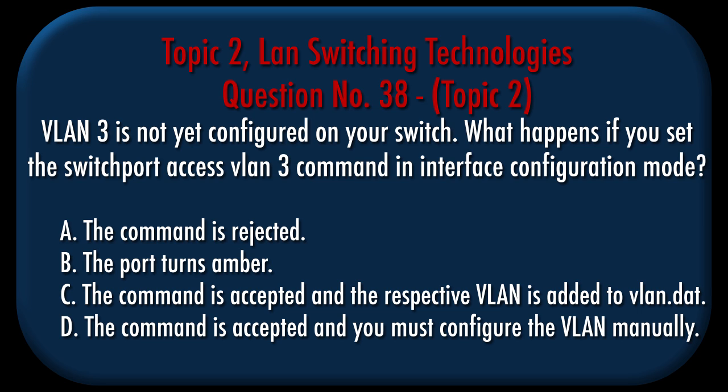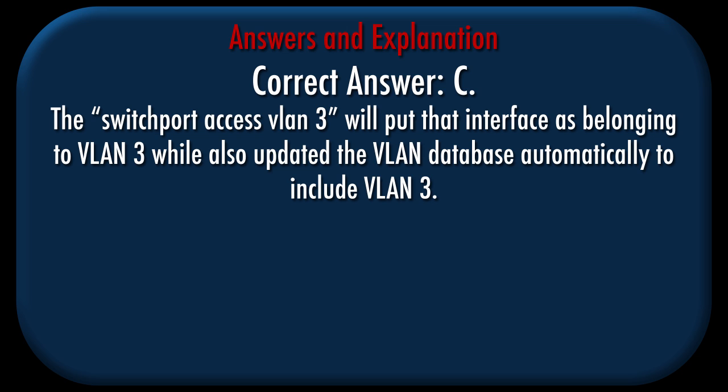Question number 38, Topic 2. VLAN 3 is not yet configured on your switch. What happens if you set the switchport access VLAN 3 command in interface configuration mode? a. The command is rejected. b. The port turns amber. c. The command is accepted and the respective VLAN is added to VLAN.dat. d. The command is accepted and you must configure the VLAN manually. Correct answer: c. Explanation: The switchport access VLAN 3 command will put that interface as belonging to VLAN 3 while also updating the VLAN database automatically to include VLAN 3.